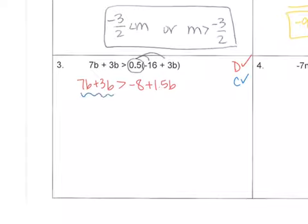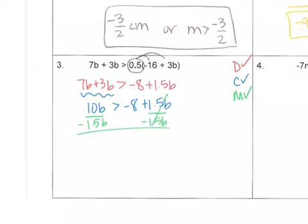I do have like terms to combine, so remember if they're on the same side, you do exactly what they say. I do have variables on both sides to move, so I'm going to move 1.5b. Remember when you move it, you change the sign.